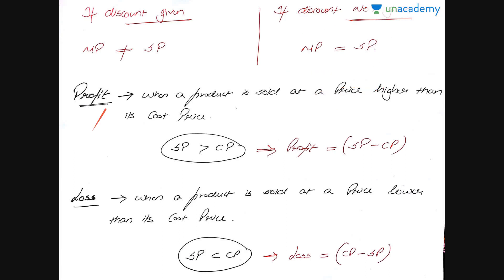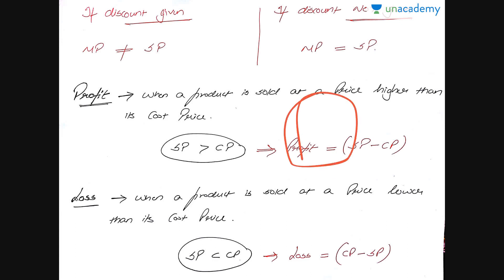Profit is when a product is sold at a price higher than its cost price. For instance, if I buy a product for 50 rupees and sell it at 70 rupees, I'm making a profit of 20 rupees — because SP minus CP is a positive number: 70 minus 50 equals 20. Sometimes the market isn't doing well and I just want to get rid of redundant products that are no longer in fashion or not attracting customers.